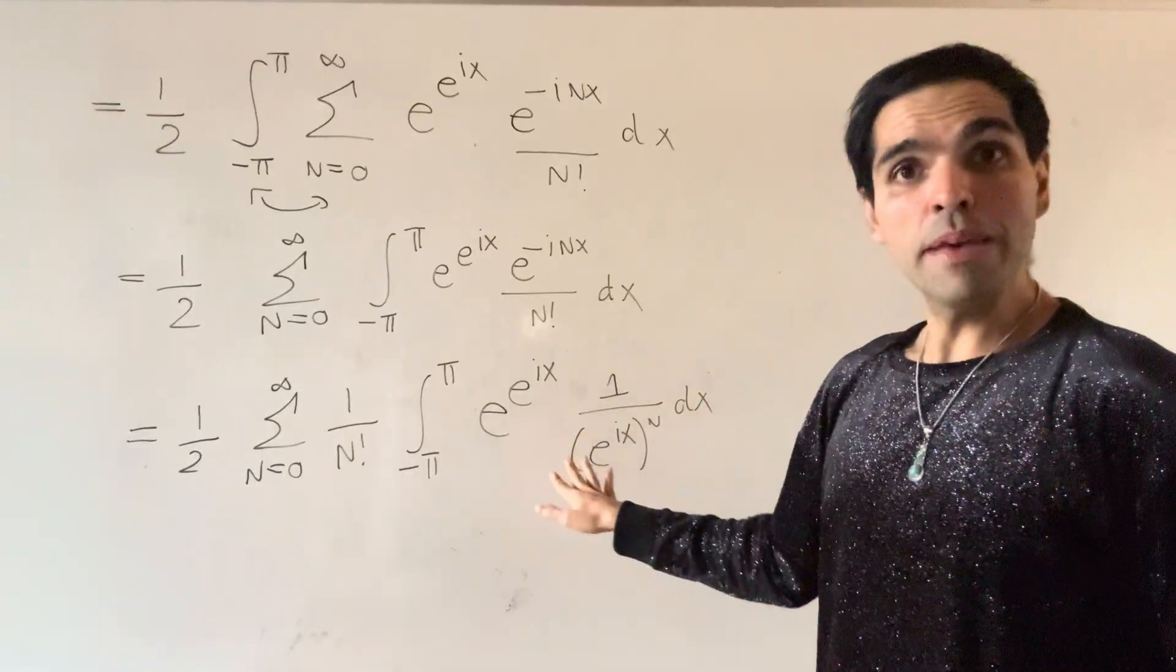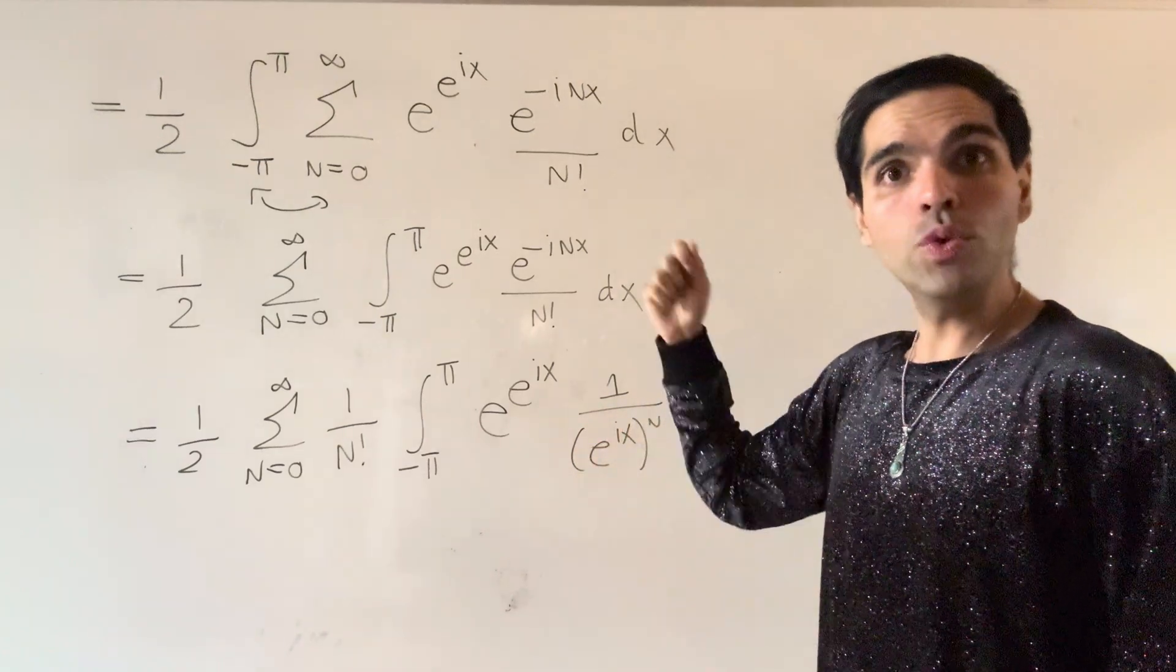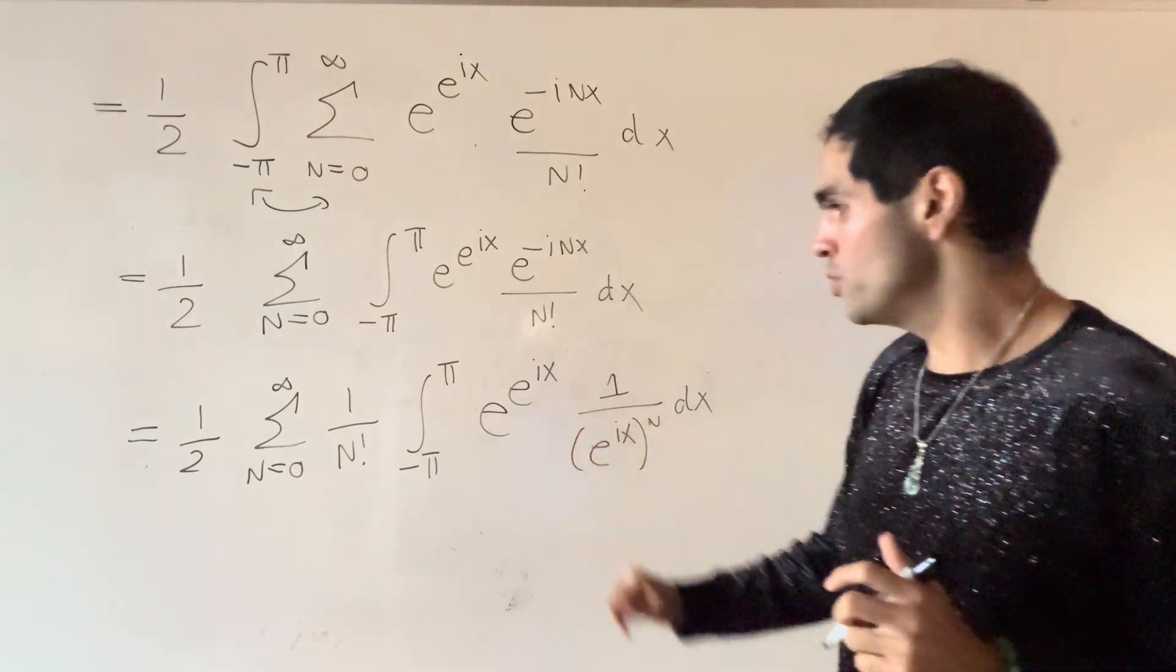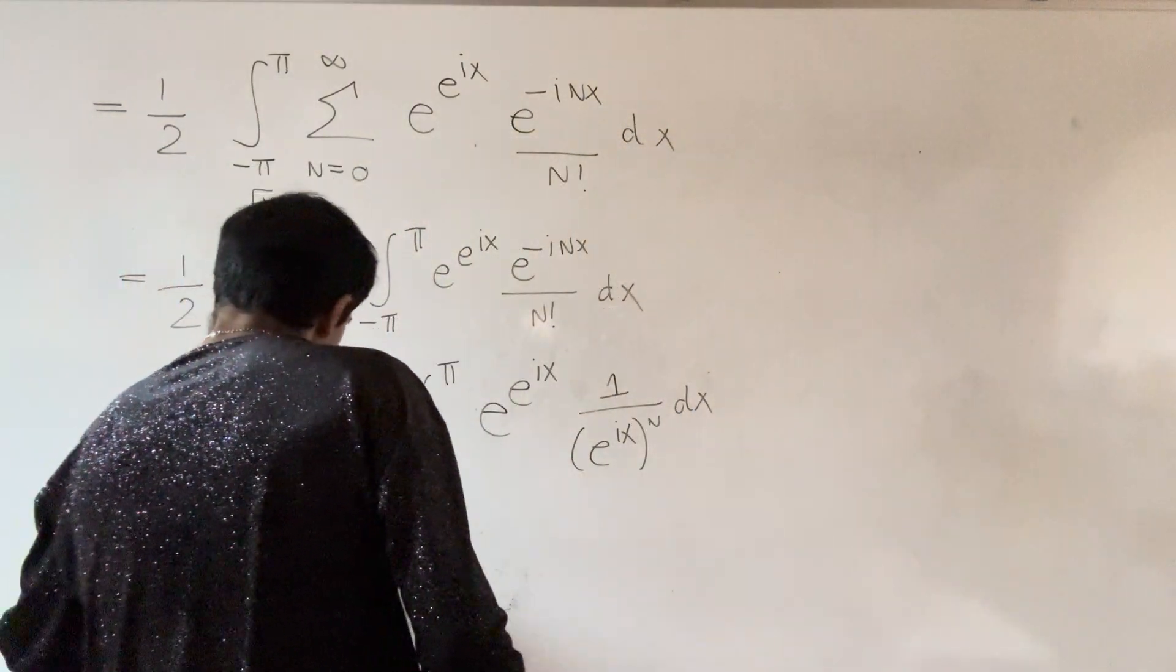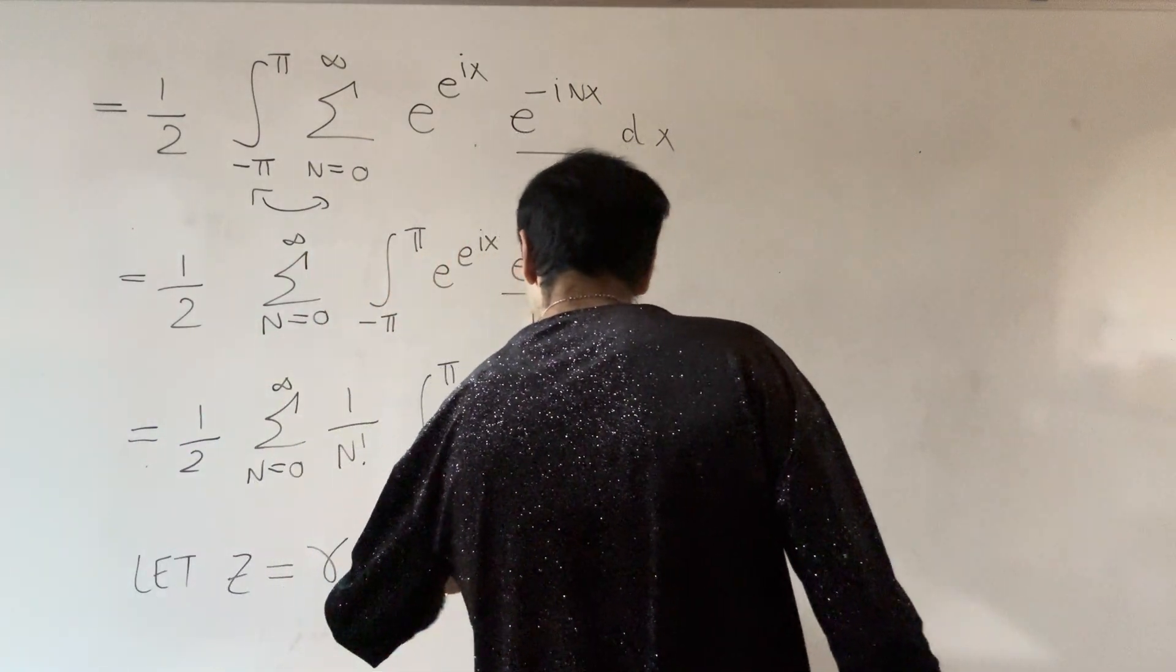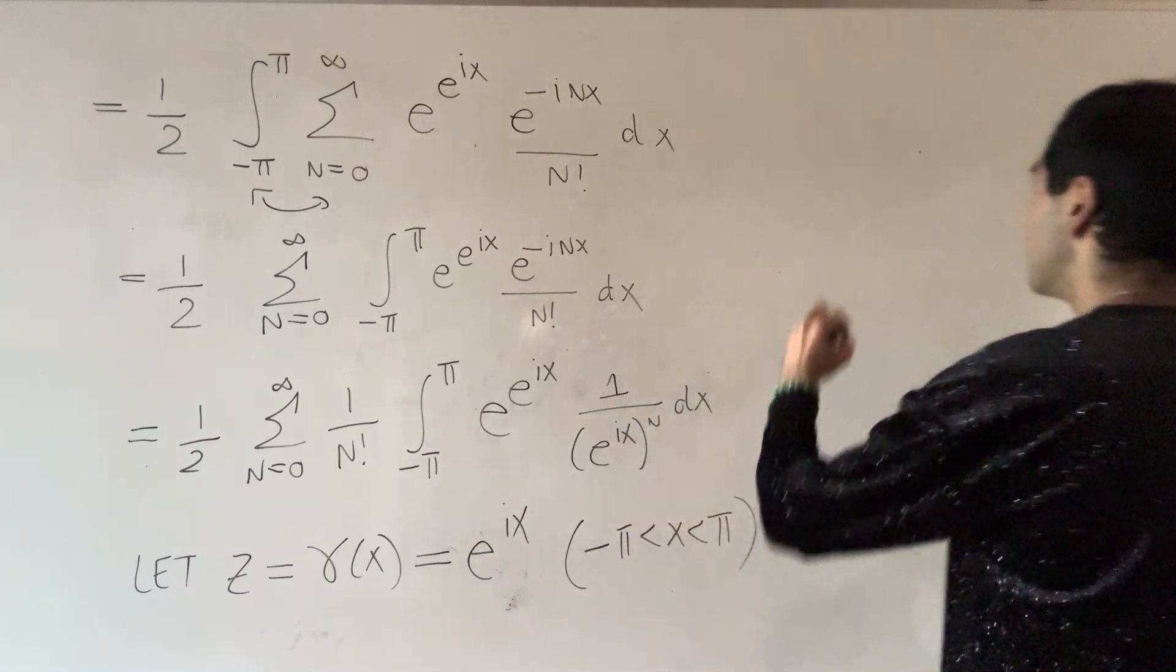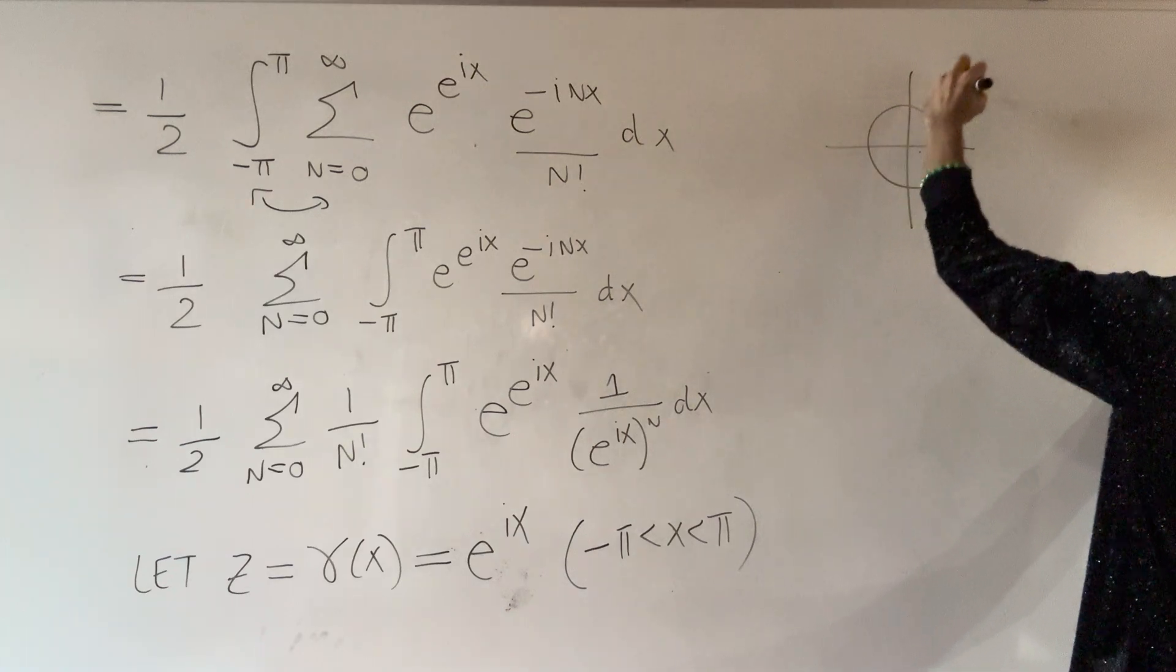And what makes this so nice is that now we can turn this into a contour integral from complex analysis. And if you're not familiar, just think a bit of a u substitution. So let z be gamma x, the parametrization of the whole circle here. So e to the i x, where x is from minus pi to pi. So here, we're just taking the unit circle and parametrizing it.